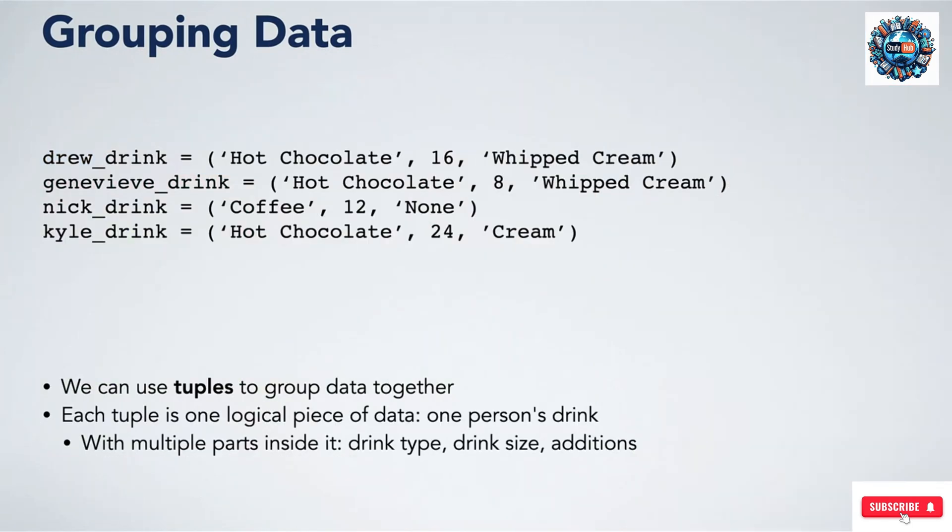Here we have one piece of data for Drew's choice, one for mine, one for Nick's, and one for Kyle's. These groupings are called tuples, which is what you are going to learn about now. You may also hear tuples pronounced tuples, both are correct ways to say it.